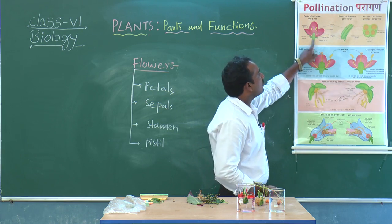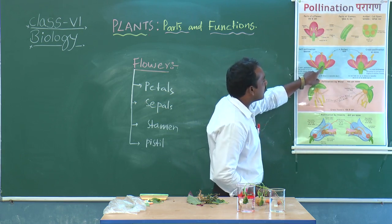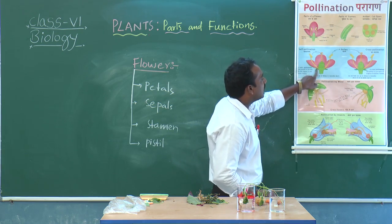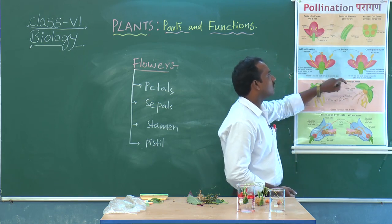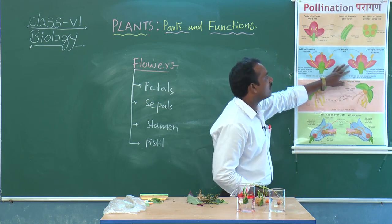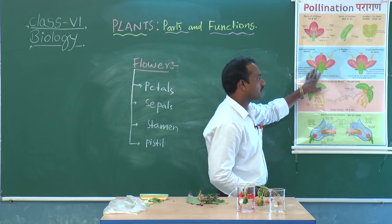Sepals are the green color leaf-like structure, which helps in protection of the flower, or protection of the inner parts of the flower.